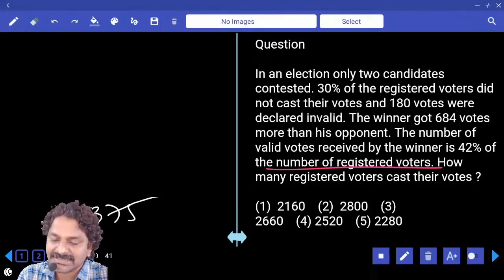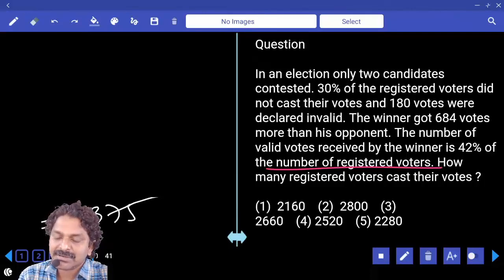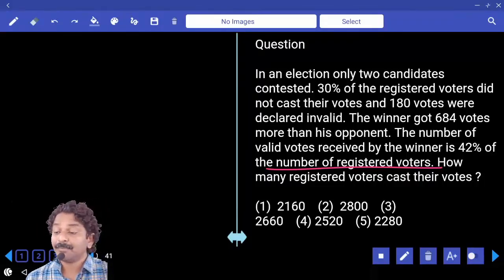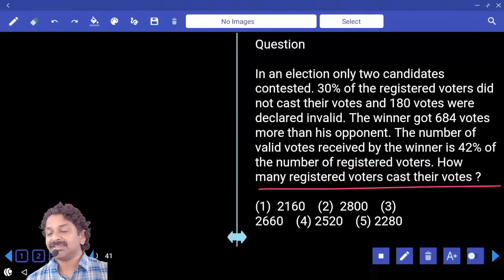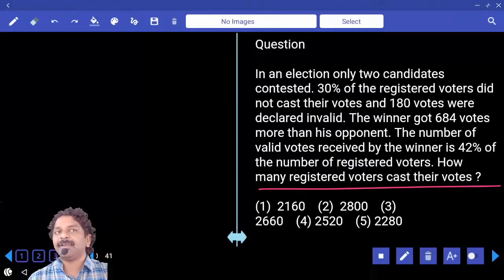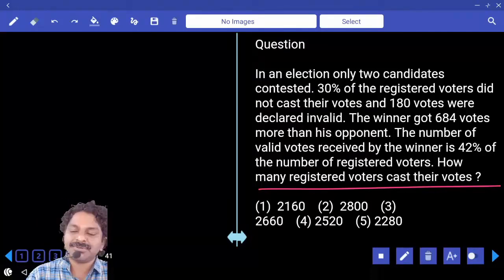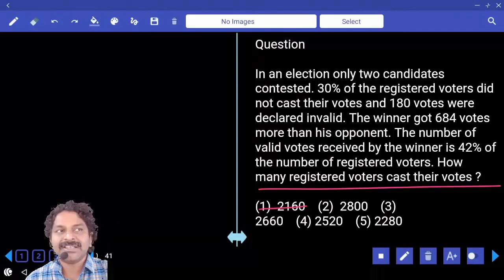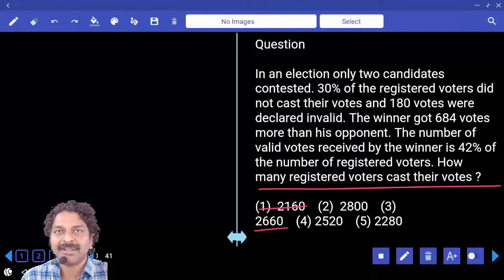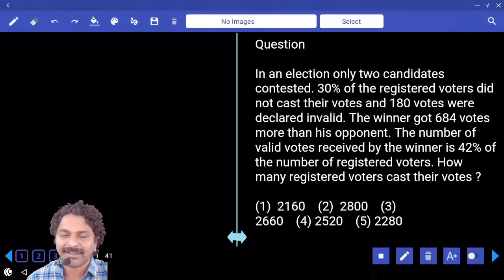70% voted, yes. Multiple options are there, so we have to calculate. See, what I verified was what percentage of the people have casted their vote, which should be a 7 multiple. That is what I verified. First option is not a 7 multiple, second is a 7 multiple, third is also a 7 multiple. Multiple options are there, so we have to calculate.